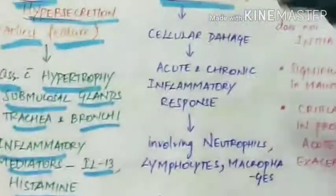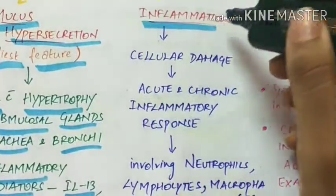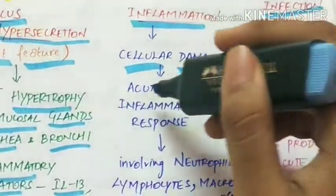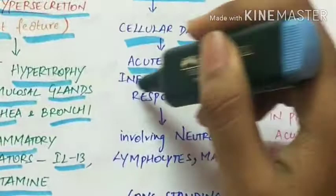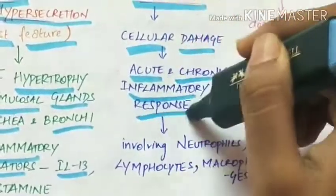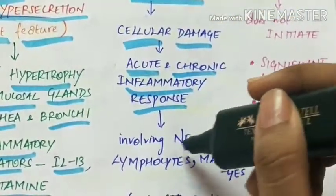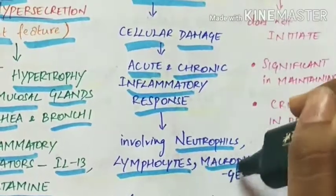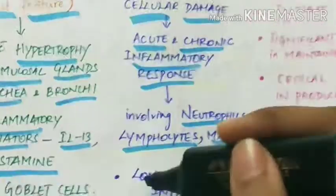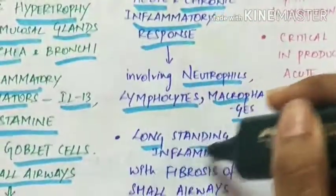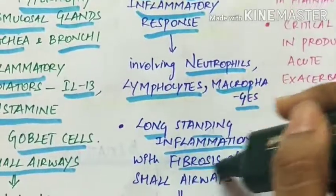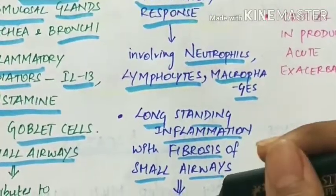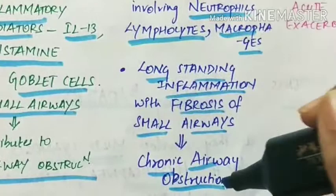Inflammation causes cellular damage and activation of acute and chronic inflammatory responses, which involve neutrophils, lymphocytes and macrophages. Long-standing inflammation with fibrosis of small airways leads to chronic airway obstruction.